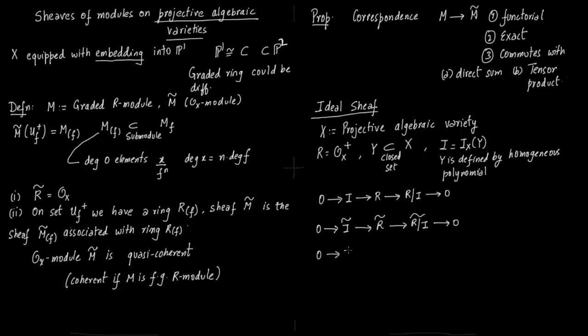So to make it more presentable, we just write it in the following form: R tilde corresponds to O_X, and R by I tilde corresponds to O_Y. That is the end of the story.